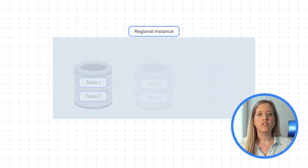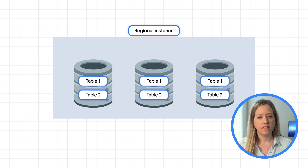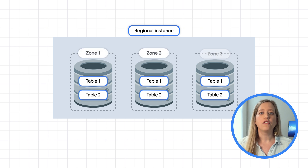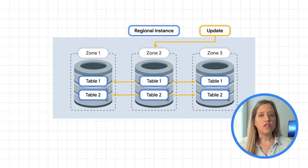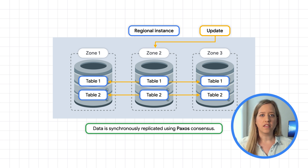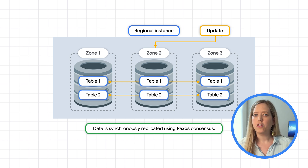Let's dig into how replication works in Spanner. A regional instance is composed of three identical read-write replicas. When you provision one Spanner node, you actually get three units of storage and compute that work together. Each replica contains a full copy of the database and is hosted in a different physical location or zone. The zones are organized to reduce the chances that more than one will fail at the same time — for example, by having independent power and cooling. As data changes, Spanner updates each of the replicas, using the Paxos consensus protocol and TrueTime to ensure these updates are strongly consistent. We'll dive into Spanner's industry-leading consistency guarantees in the next video.